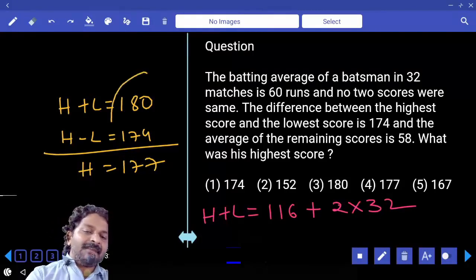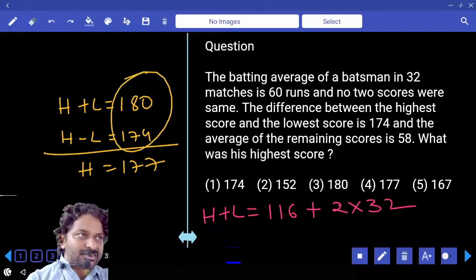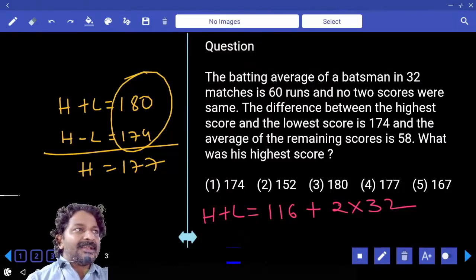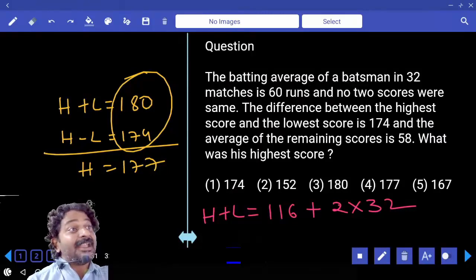You don't have to waste your time to calculate average for these two numbers. You know that highest runs are more than 174 and must be less than 180, and there is only one option. So that's all.